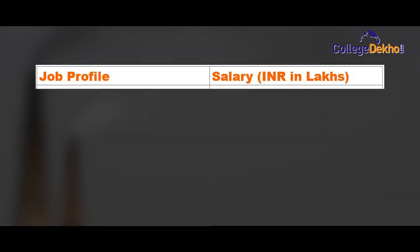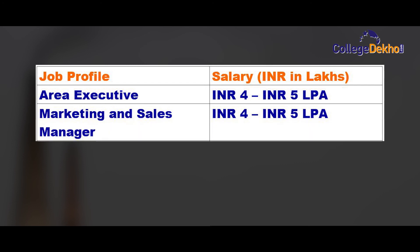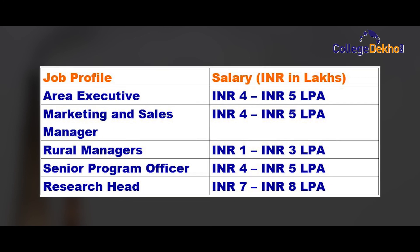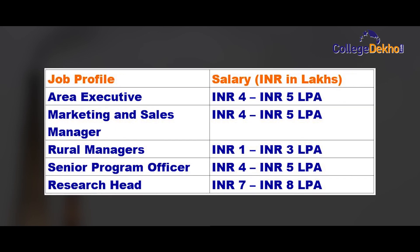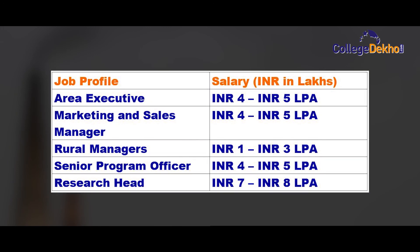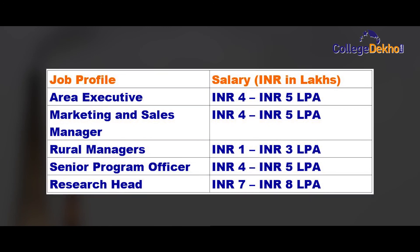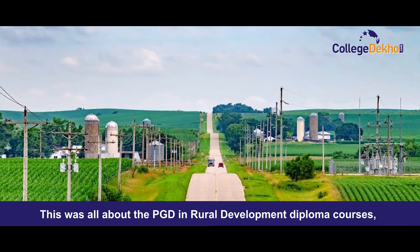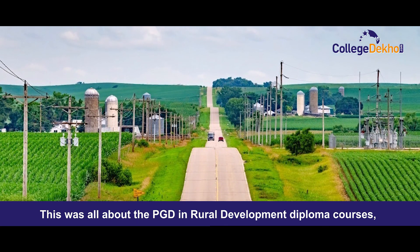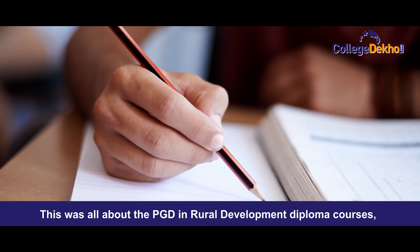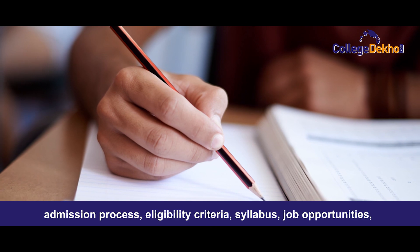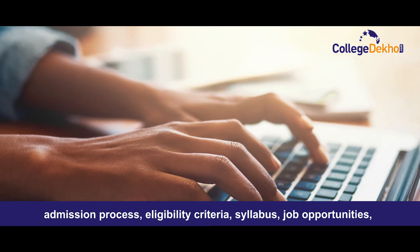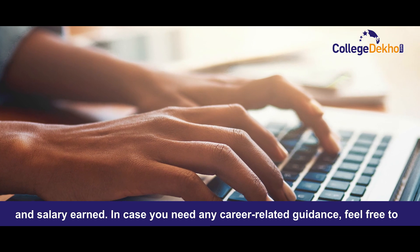Lastly, after completing PGD in Rural Development diploma course from prestigious colleges, the graduate can make a starting salary ranging between 1 lakh to 8 lakh per annum. This was all about PGD in Rural Development diploma courses, admission fees, eligibility criteria, syllabus, job opportunities, and salary earned.